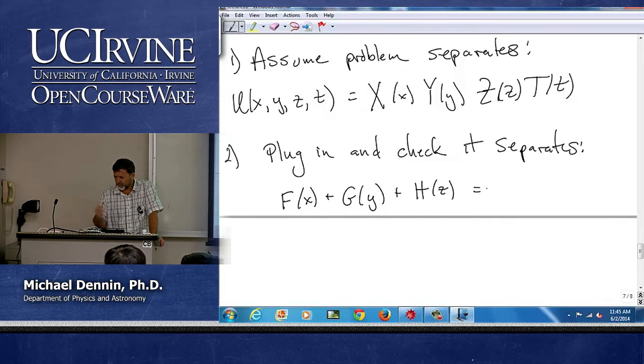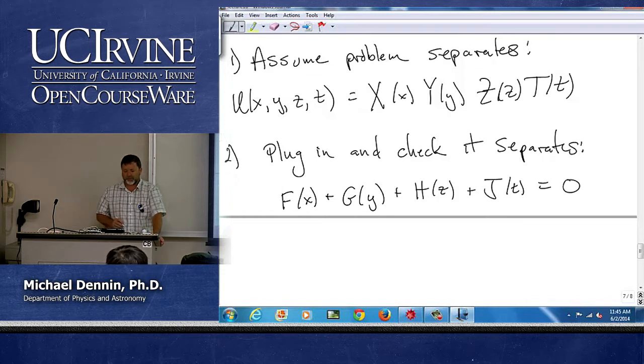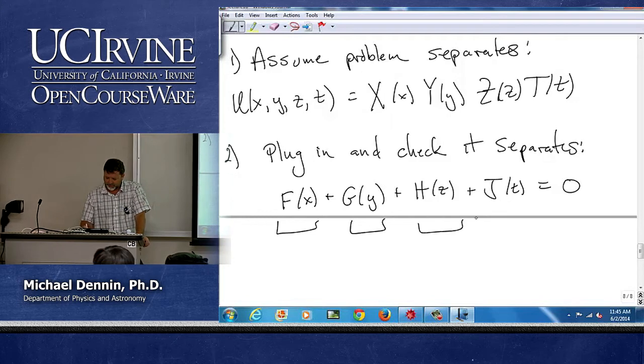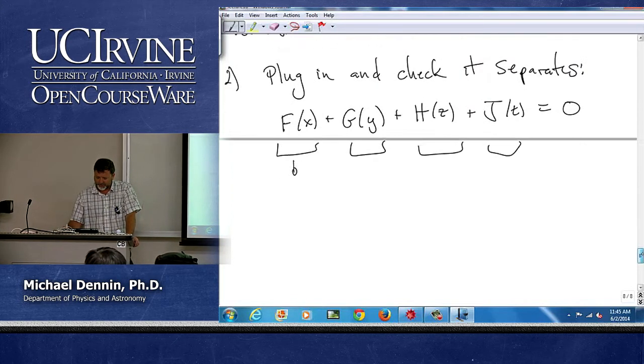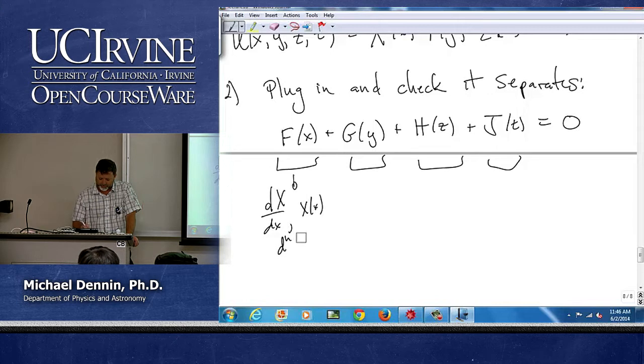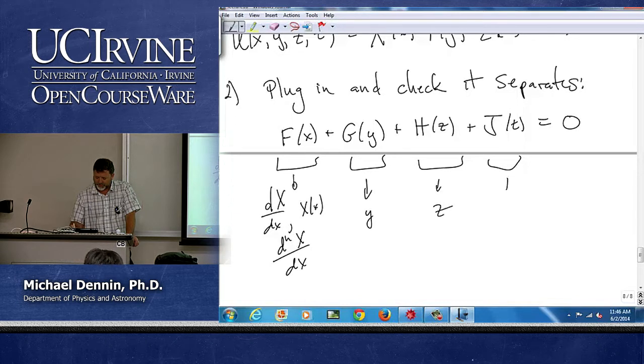a function of z, and if you rearrange things, well let's just leave it all on the same side, and a function of t equals zero. Now, each of these functions, so this one for instance, will have total derivatives of x, and it will have x, and it might even have nth derivatives of x. And then this will have the same thing for y, for z, and t.